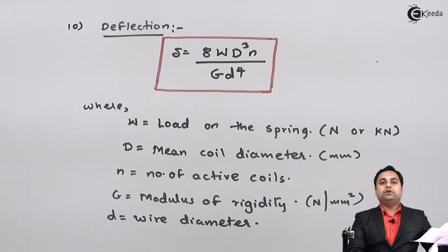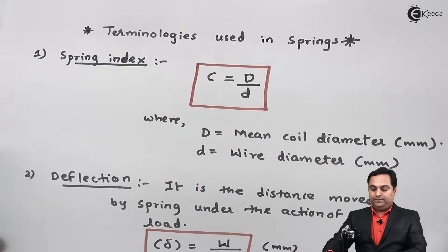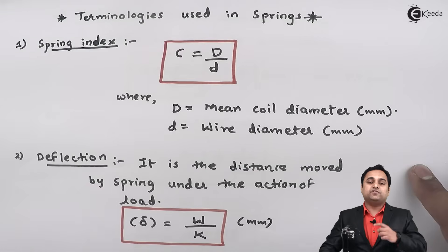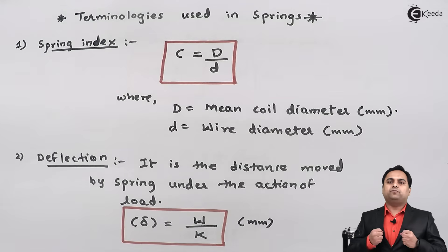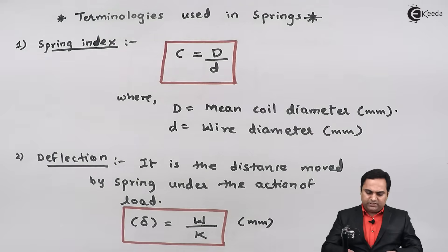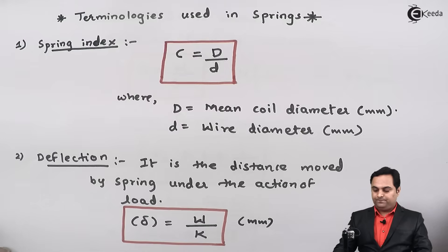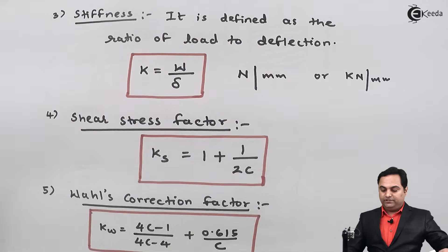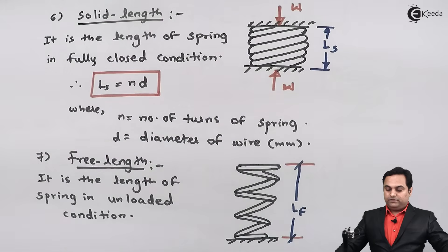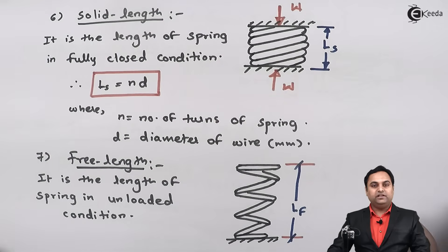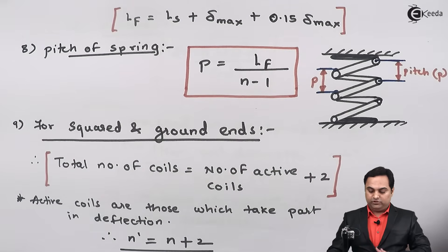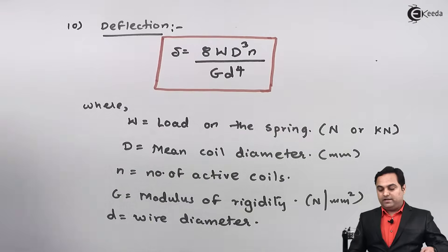In this video we have seen the terminologies commonly used in the case of springs. Starting with spring index, deflection, stiffness, shear stress factor, Wahl's correction factor, then solid length, free length along with their formulas, pitch of spring, squared and ground ends, and finally the deflection formula.